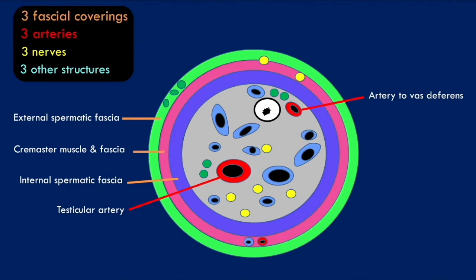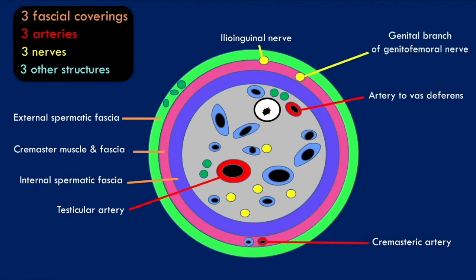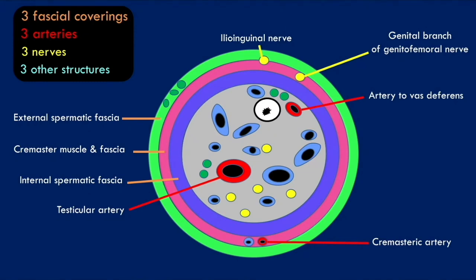The third artery is the cremasteric artery, which supplies blood to the cremaster muscle and cremaster fascia. In terms of the nerves, these include the ilioinguinal nerve and the genital branch of the genitofemoral nerve, both of which are clinically important as they are involved in the cremasteric reflex. There are also autonomic nerves, such as sympathetic fibers.